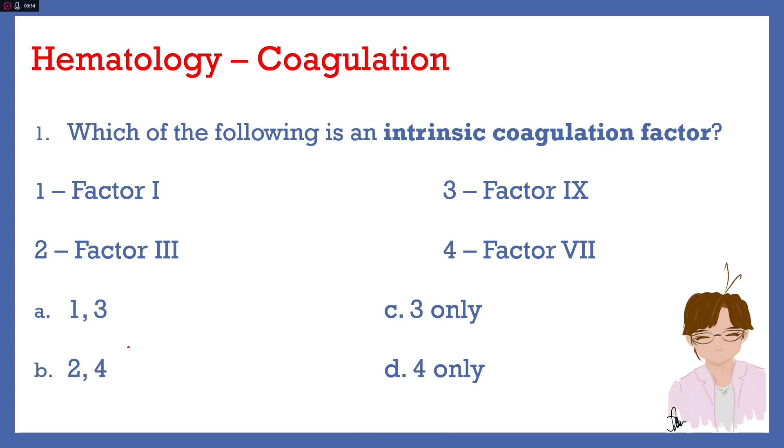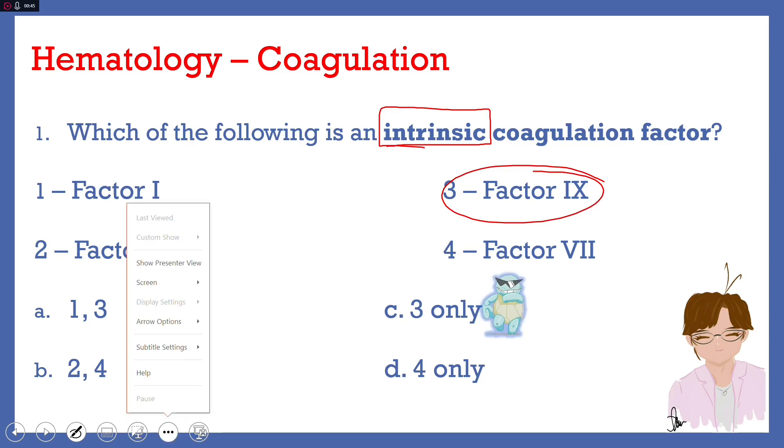Our answer here is letter C, 3 only. Factor 9. The question is about intrinsic coagulation factors. The coagulation factors are divided according to what pathway they participate in. If you will remember, we have three pathways.